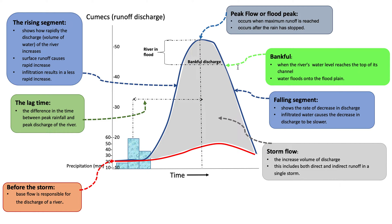Here in green, we're taking a look at bankfull. Bankfull is when the river's water level reaches the top of its channel and water floods onto the flood plain. On the right side of our hydrograph, we can see a decreasing gradient — this is known as the falling segment. The falling segment shows the rate of decrease in discharge, and infiltrated water causes the decrease in discharge to be slower.